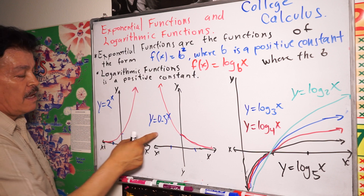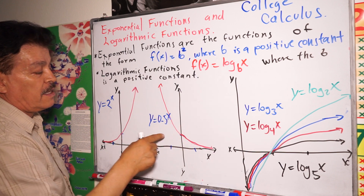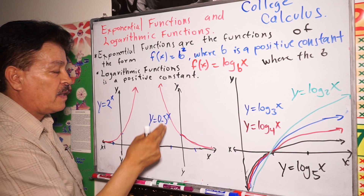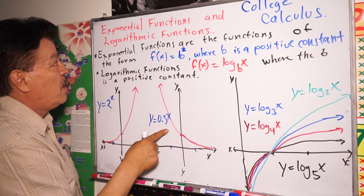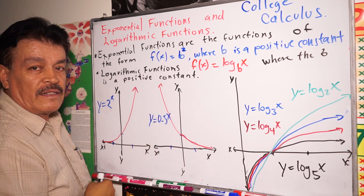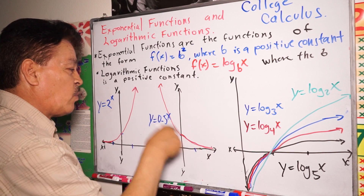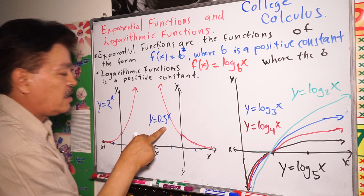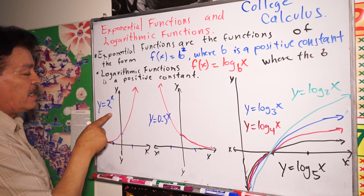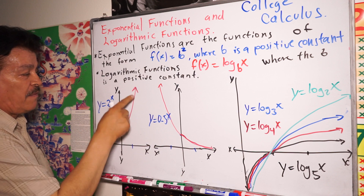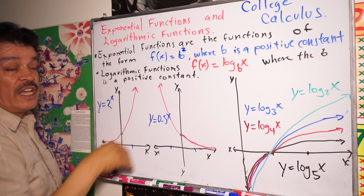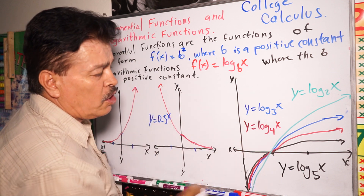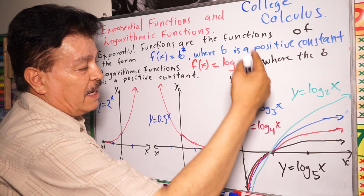On the other hand, look at this: y equals 0.5 to the x power — it's also an exponential function. Look at the graph; it's running in this way. When this coefficient is very little, close to between 0 and 1, the graph runs this way. When the coefficient is 2, the graph runs the other way. This is what you see with exponential functions.